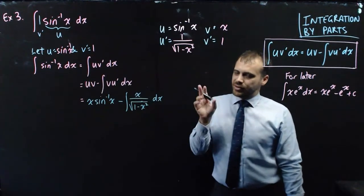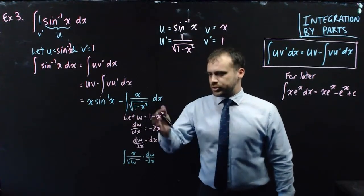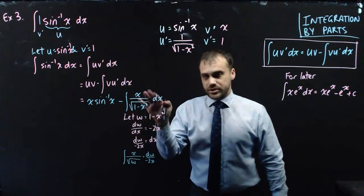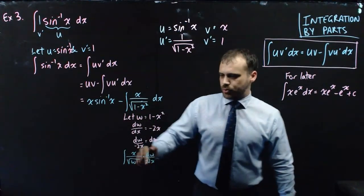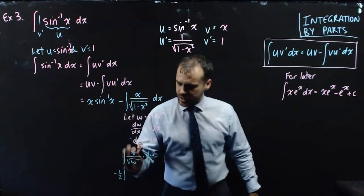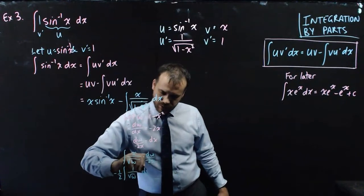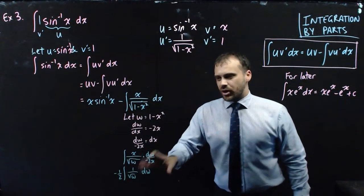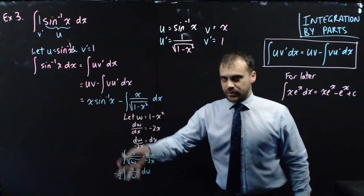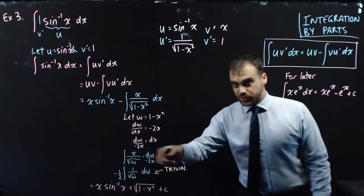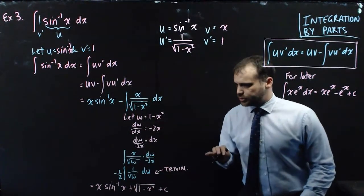Now we have to integrate x over √(1 − x²) — that's an ugly one and you've actually got to do that by substitution. Since I've already used u and v, I'm going to use w: let w equal 1 minus x². After the substitution, the x's cancel and I end up with the integral of negative one-half times 1 over √w with respect to w. Integrating that and substituting 1 minus x² back in for w gives us √(1 − x²).